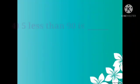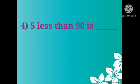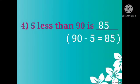Now, number 4. 5 less than 90 is? Less than means we have to do the subtraction or we can do the backward counting. So, 90 minus 5, we will get 85.